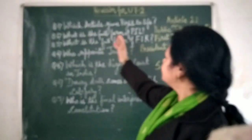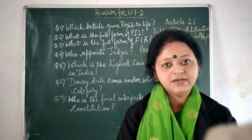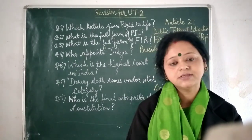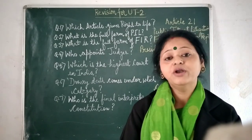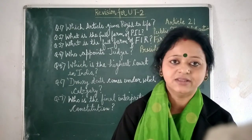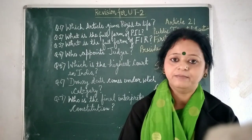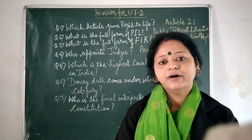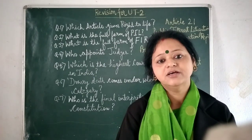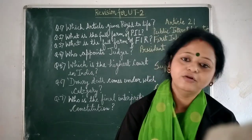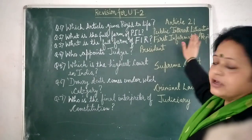Now see question number 2: what is the full form of PIL? In the 1980s, the Supreme Court devised a mechanism to help those people who are poor, who are illiterate, who don't have the time to go to court again and again to get justice. To help those people, they devised a new mechanism called PIL. In PIL, a person can write just a letter or a telegram to the court to get justice for the public. The full form of PIL is Public Interest Litigation.